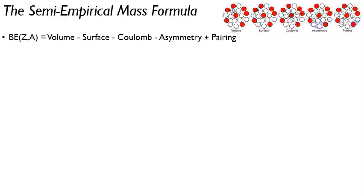And it's named that because it is empirical—it's ultimately fit to data—but semi-empirical because there is a decent physical justification behind the terms of the formula. So the formula gives you the binding energy of a nucleus given the number of protons that it has and the number of nucleons. So this is the sum of protons and neutrons.